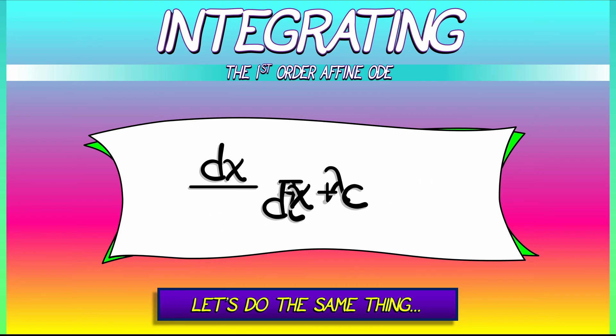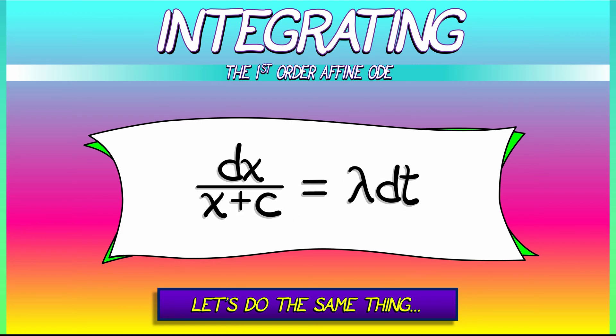What we're going to do is multiply through by dt, divide through by quantity x plus c. This makes things very nice. Why?